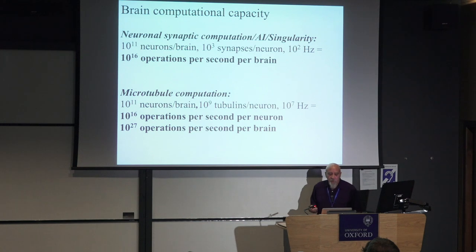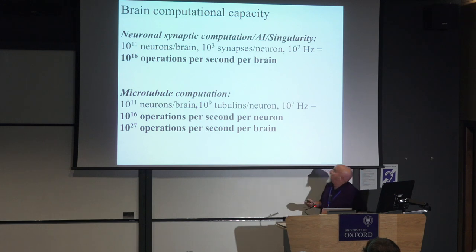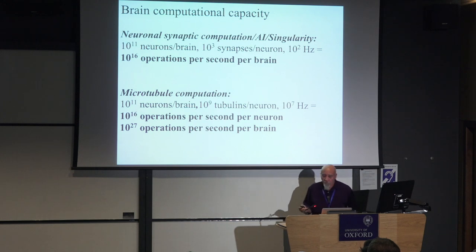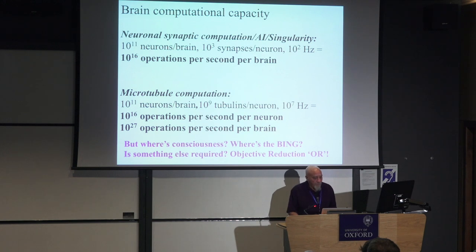For example, taking the AI singularity approach: 10 to the 11th neurons per brain, 1,000 synapses at about 100 hertz gives you 10 to the 16th operations per second. Ray Kurzweil has said get us to 10 to the 16th operations per second and we'll have brain equivalents. But it's not that simple. Microtubule computation — 10 to the 11th neurons, 10 to the 9th tubulins per neuron, 10 to the 7th hertz — gives you 10 to the 16th operations per second per neuron, or 10 to the 27th operations per brain. But where's consciousness? Is something else required? Is that objective reduction?